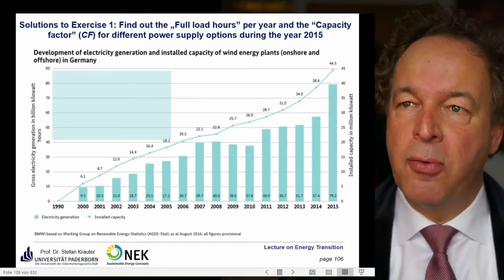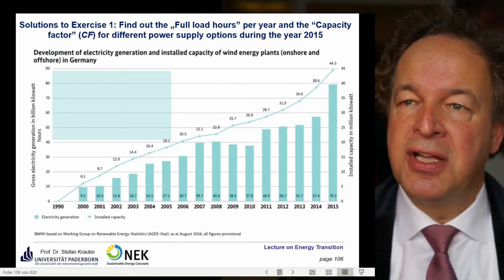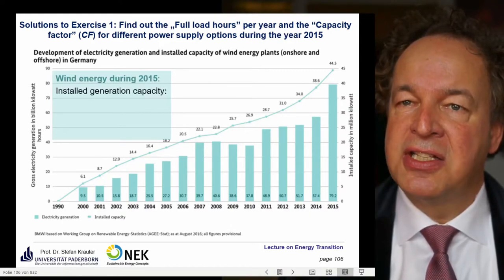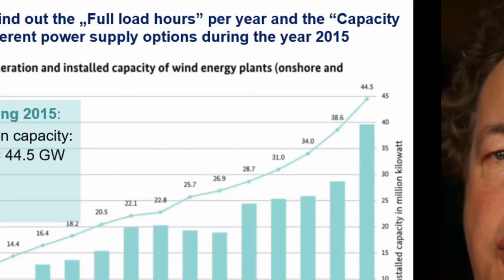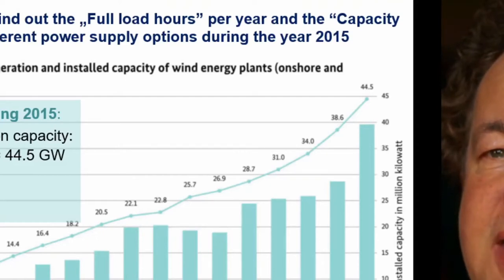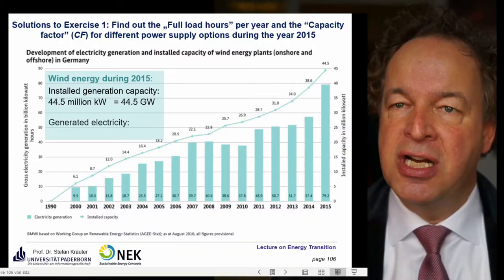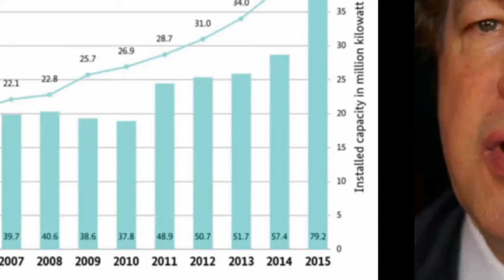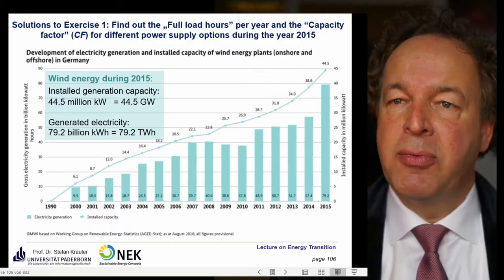Let's take a look at wind power. We have here the same table for wind power. In 2015, the installed generation capacity was 44.5 million kilowatt, equivalent to 44.5 gigawatts. The generated electricity during 2015 was 79.2 billion kilowatt hours, equivalent to 79.2 terawatt hours.